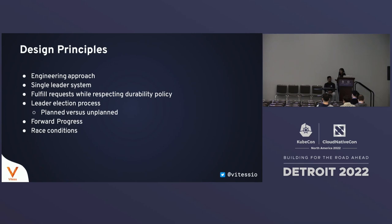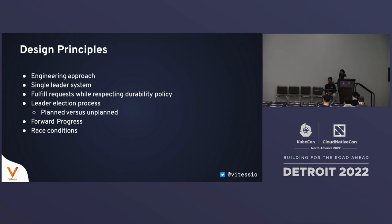We've separated planned leader elections from unplanned leader elections. Normal operation is very high QPS — we expect Vitess systems to get millions of queries per second for reads or writes. Leader elections are much rarer: planned elections in Kubernetes may be once a day or once a week, and unplanned elections are expected to be relatively rare. The way you achieve consensus for normal operations is very different from the way you do it for leader election.